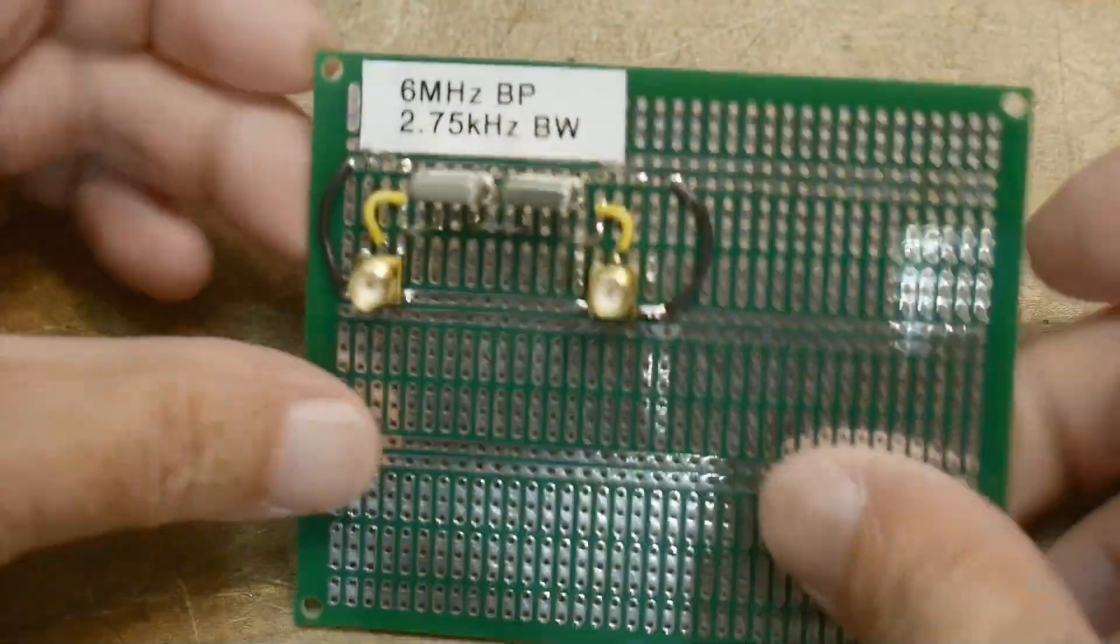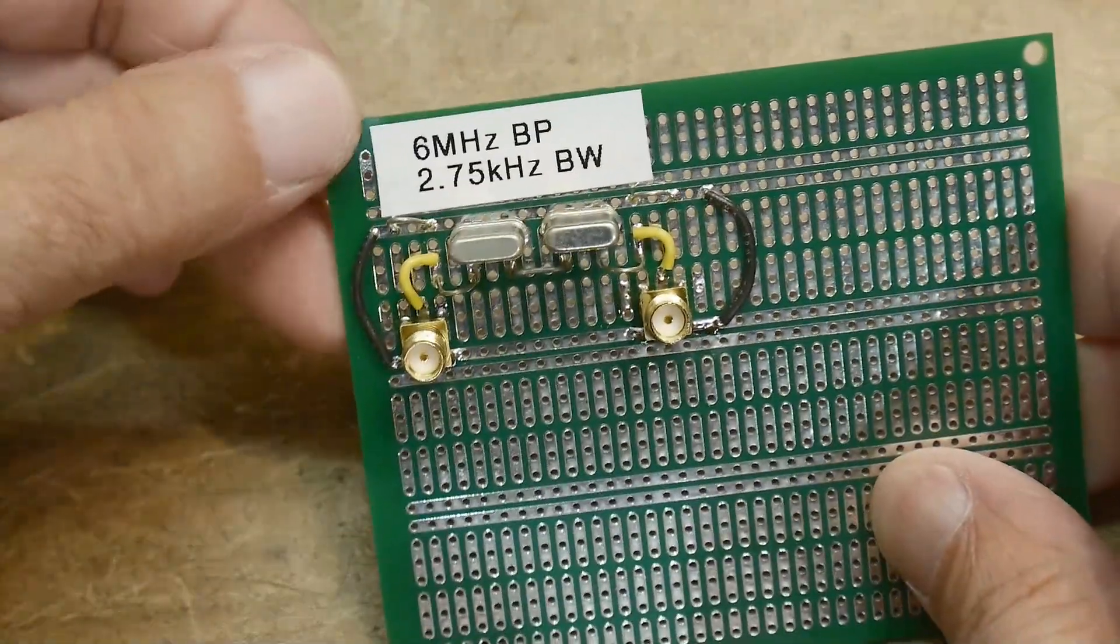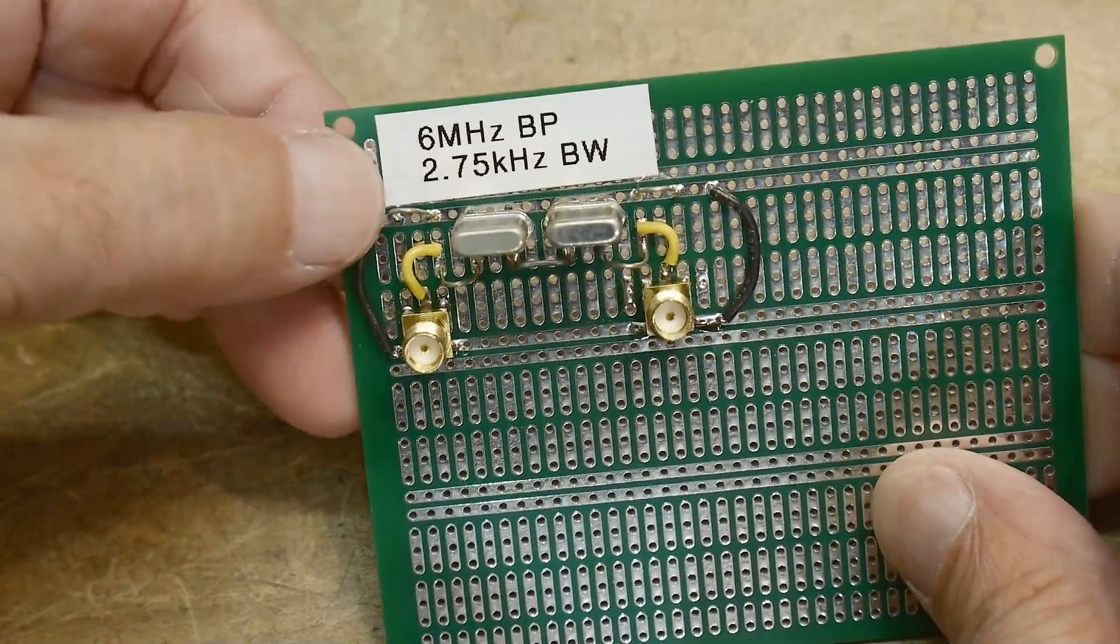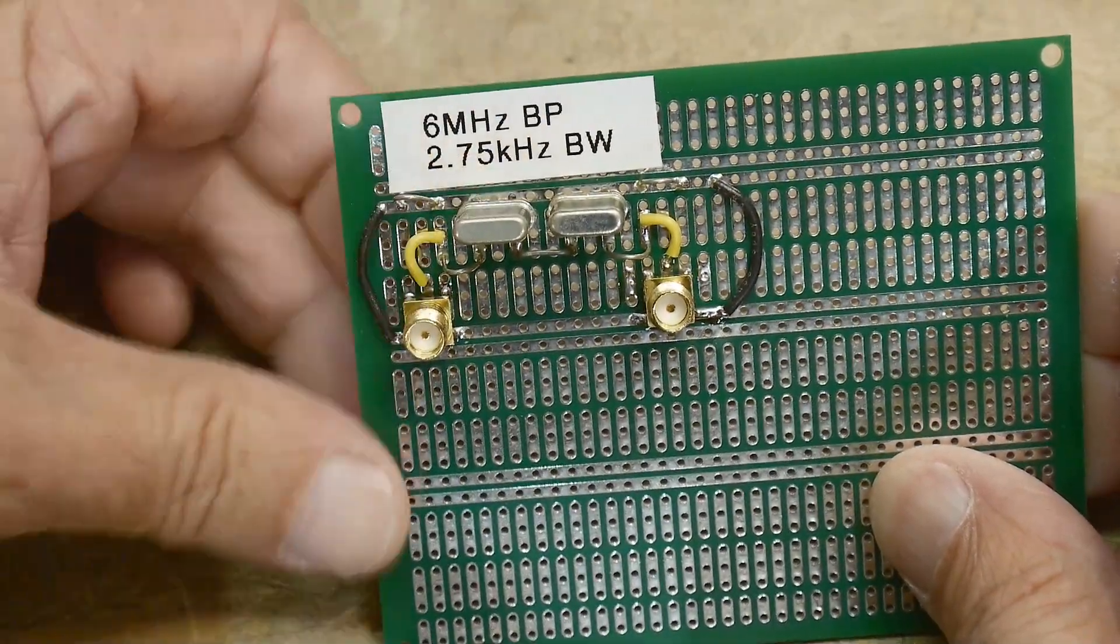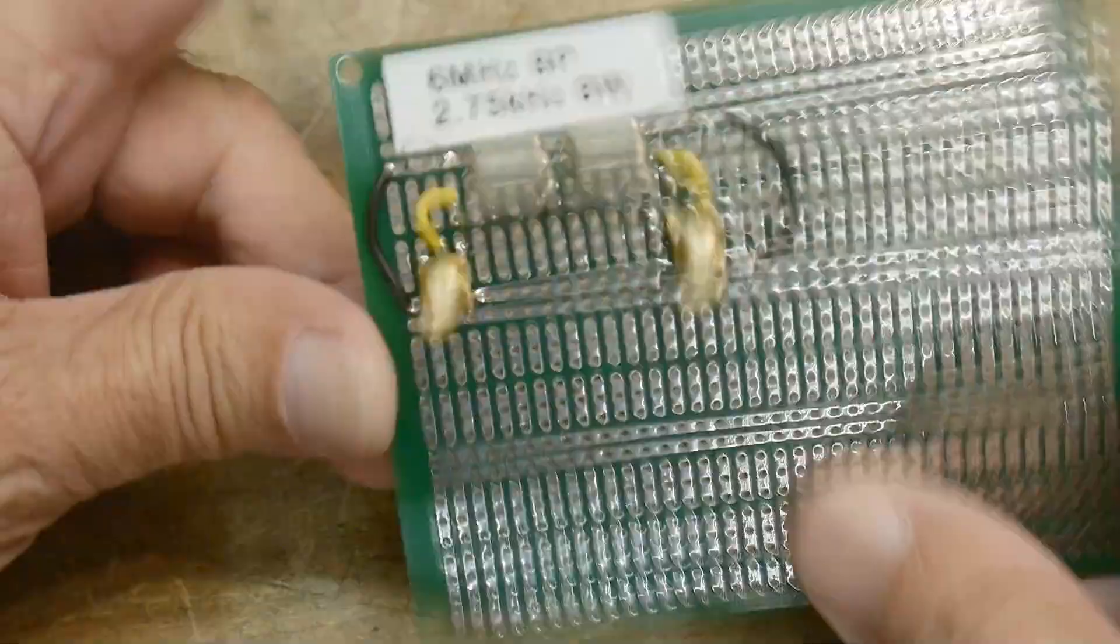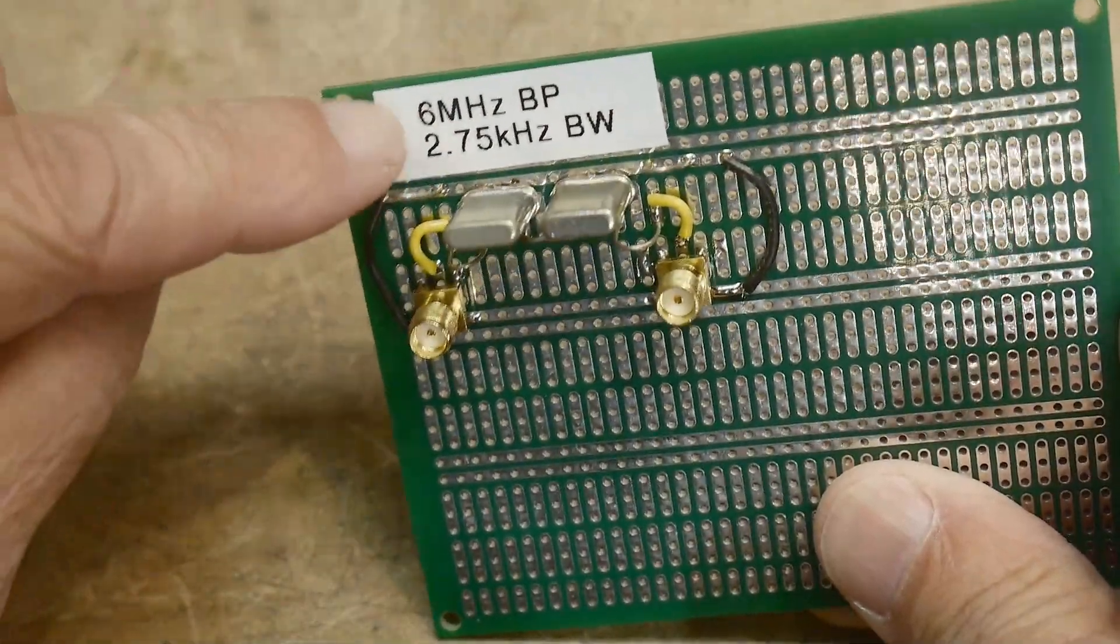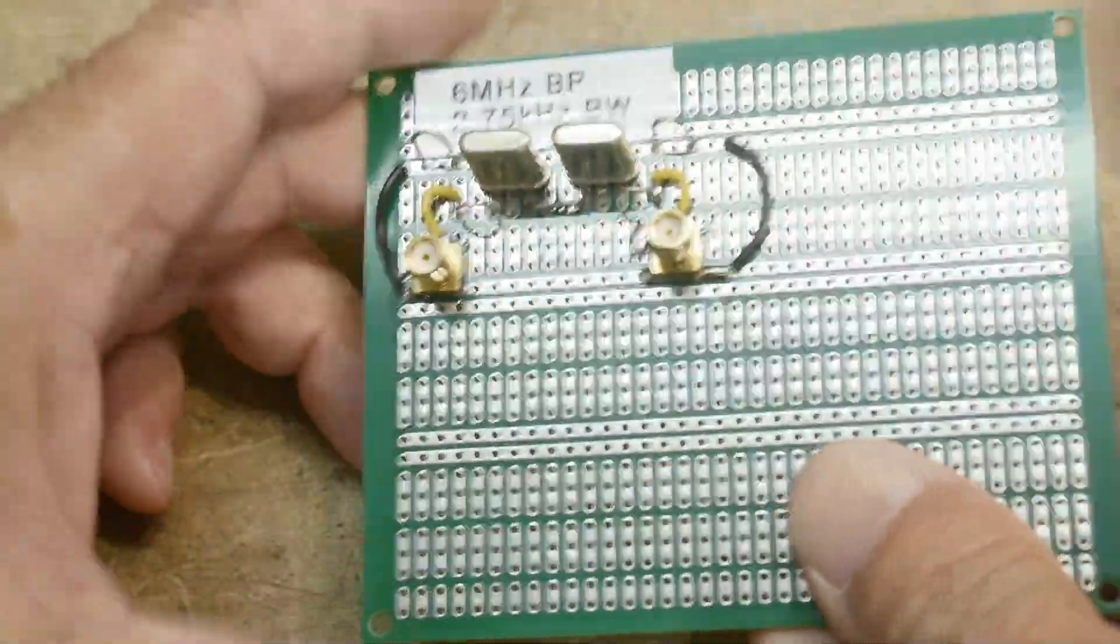All right, what's on the bench? Well, it looks like it's a six megahertz bandpass filter at 2.75 kilohertz bandwidth. I knew it was going to be six megahertz, but I didn't know what the bandwidth was before I built it.